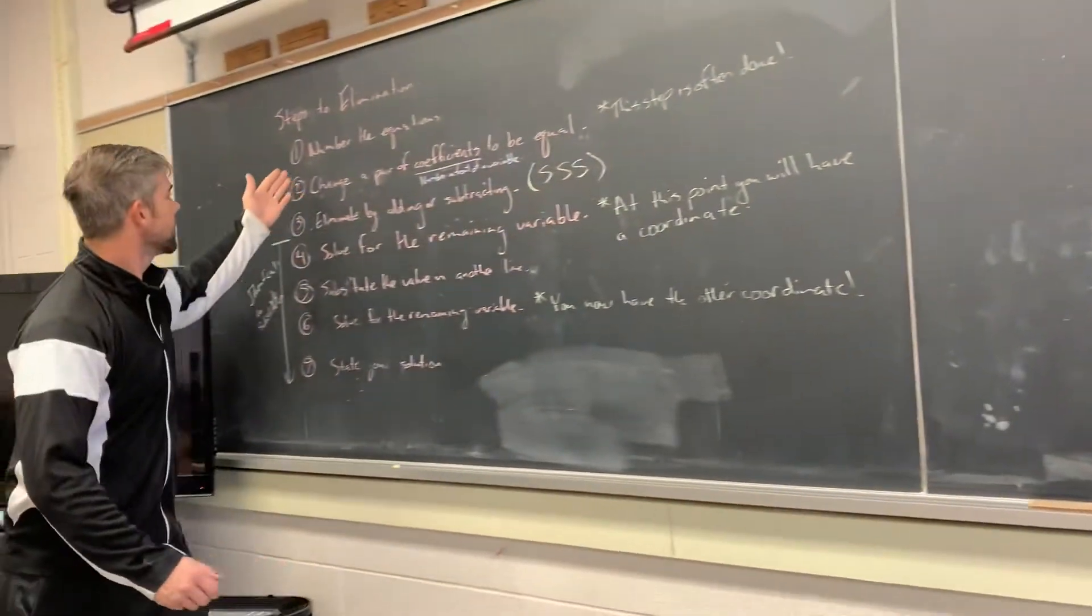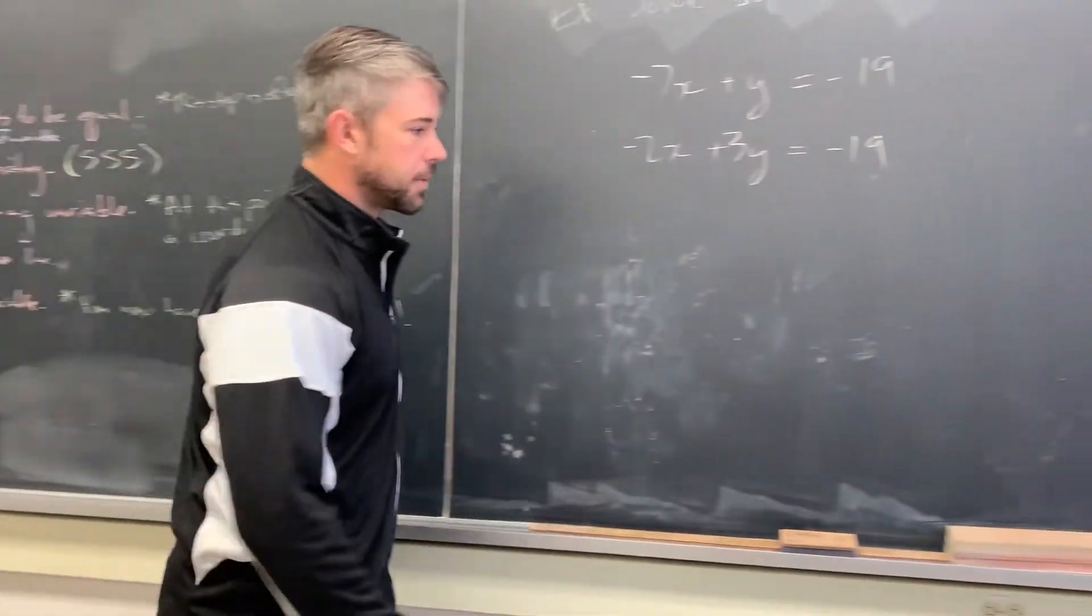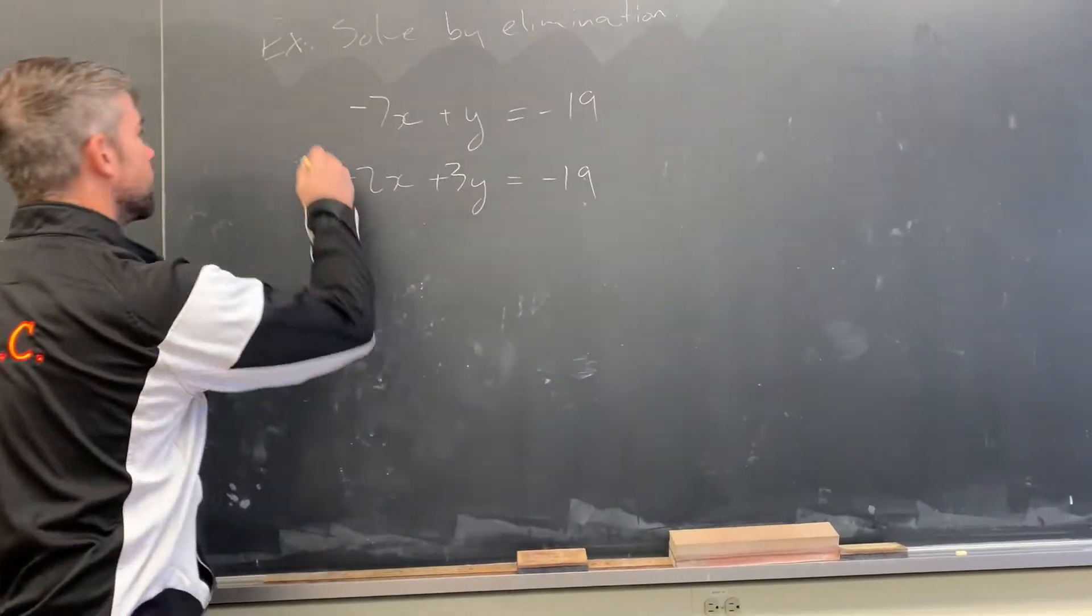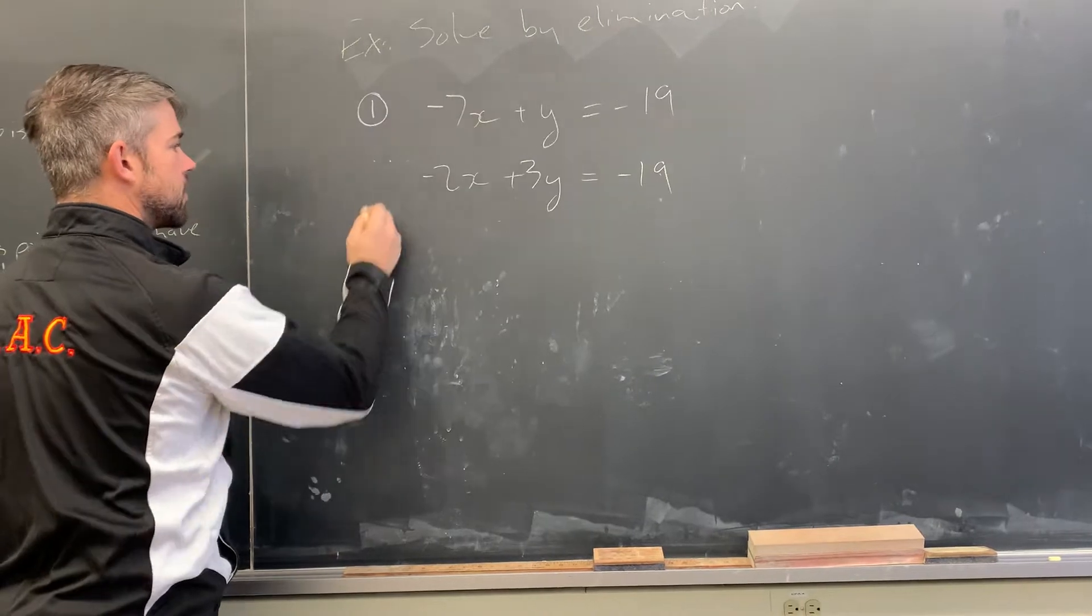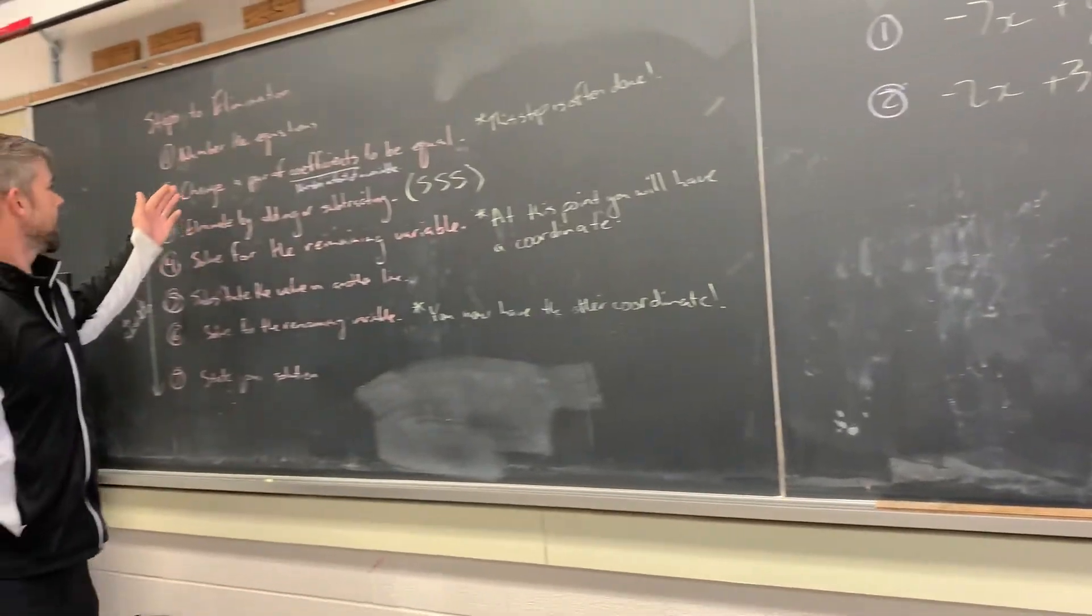So we'll take a look. Step one says we'll number the equations off. We can number them whatever we like, but I'm going to choose to number them in equations one and equation two. So equation one will be the first and equation two the second. Excellent.